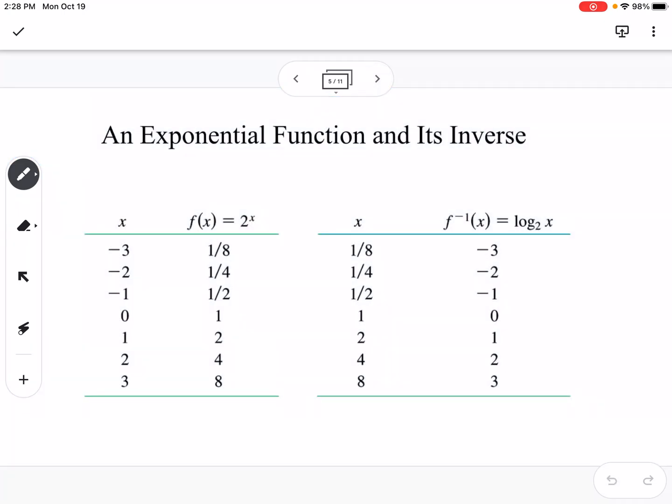We have a table where we have x and f of x equals 2 to the x, so we can see the values. And then we have x and the inverse is equal to log base 2 of x. If we were to graph both of these, we'd end up with an exponential and our log, and they would be reflected over that y equals x line. Again, they're inverses of each other.